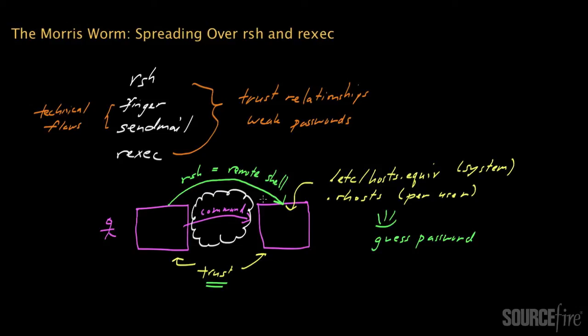The Morris worm uses RSH from one computer to establish a remote shell on a separate trusted computer, and then, having established that shell, the worm will copy itself and execute itself onto the remote system. It's actually quite simple when you think about it that way.